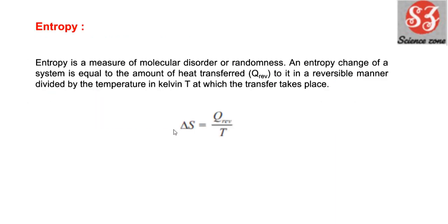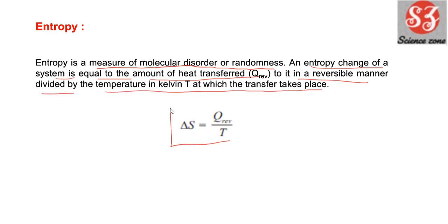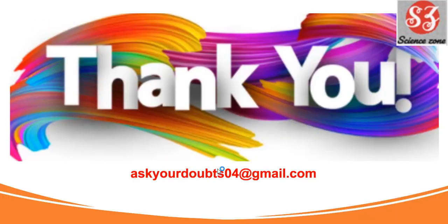Next है entropy। Entropy actually measure है of molecular disorder या randomness — molecule में कितना disorder या randomness है उसका measure होता है entropy। Entropy change of any system वो equal होता है to the amount of heat transferred to it in a reversible manner divided by temperature T in Kelvin। That is ΔS = q_rev / T।